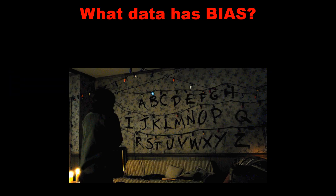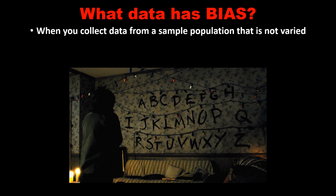So what exactly is bias? What data has bias? Will is sending us a message lighting up the letters B, I, A, S. When you collect data from a sample population that is not varied, you're going to have bias.